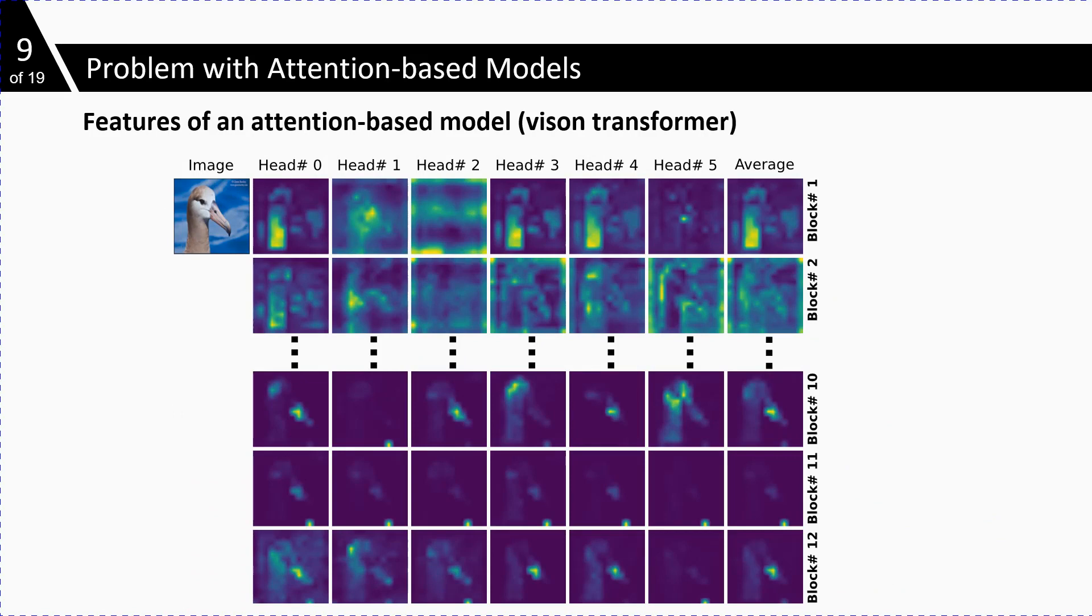To deal with these issues, transformer-based methods for weakly supervised learning have been proposed as they are able to detect different parts of the object in each layer. This image shows the class tokens from transformers trained in weakly supervised fashion using TSCam method.